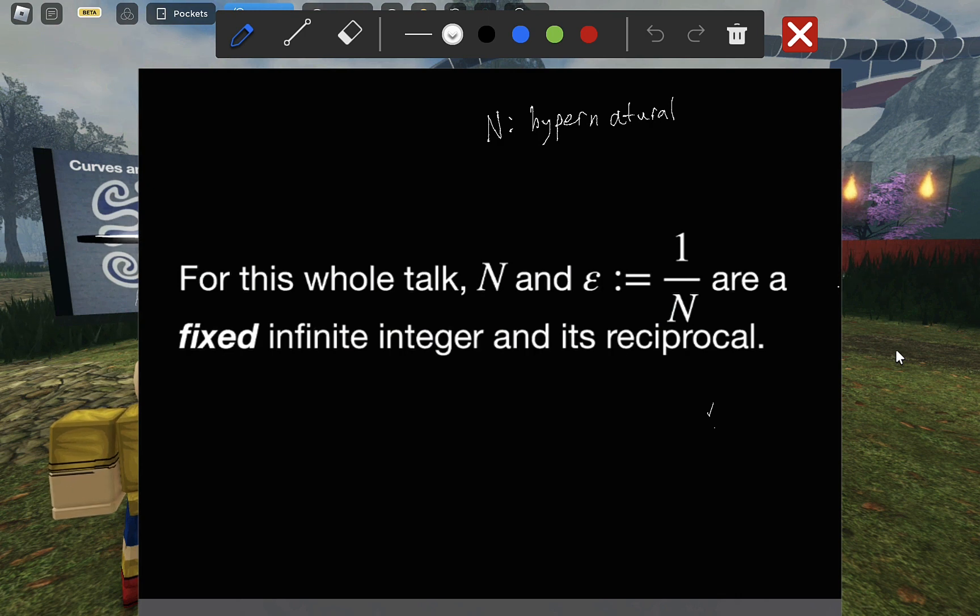And epsilon is its reciprocal. For the whole talk, they will denote that specific infinite number to denote that it really is kind of arbitrary.